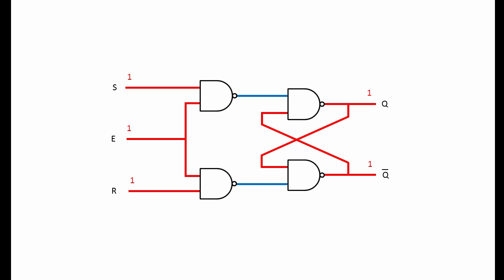In reality, both Q and not Q would become high. Then, if both S and R fell to 0 at the same time, we'd have a race condition. The cross-connected NAND gates would race each other to feedback their outputs, making it impossible to predict the next state of the latch.